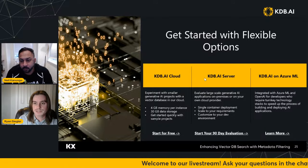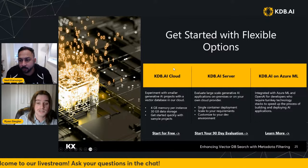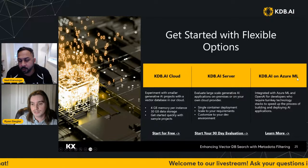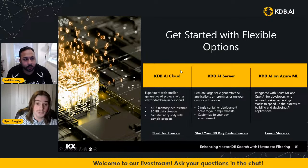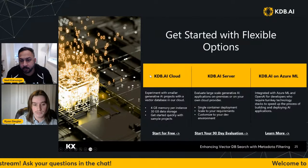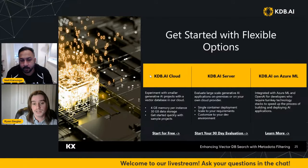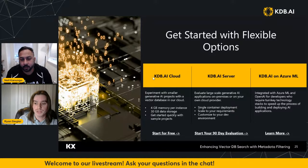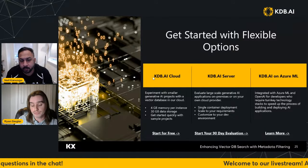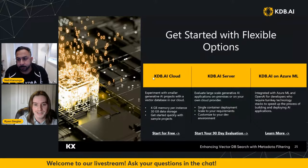Just a reminder of the few different ways to access KDB.AI for free: the cloud version, the server version, and a version on Azure. I agree with Neil — check out the cloud version, it's really easy to sign up. The nice thing is we have sample notebooks available on our GitHub. If you want to get started and run a sample notebook for creating a retrieval augmented generation pipeline, you could get this done in a matter of minutes from scratch. So it's easy to get started and I think you'll find it pretty interesting to get your hands dirty and try it out.